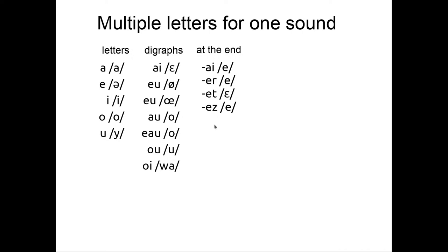Some vowel change at the end. For example, AI at the end is not pronounced. AIS is pronounced E. And ER is pronounced E. ET is pronounced E or E in some accent. And EZ is pronounced E also.